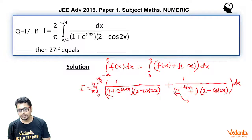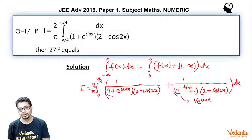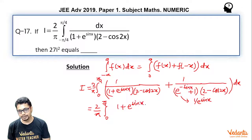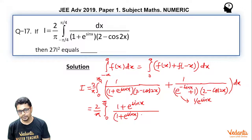Now we can write e^(−sin x) as 1 divided by e^(sin x), and taking LCM this whole expression becomes e^(sin x) divided by (1 + e^(sin x)). Taking LCM of the full expression, i becomes 2 by π integral from 0 to π/4 of (1 + e^(sin x)) divided by (1 + e^(sin x))(2 − cos 2x) dx.